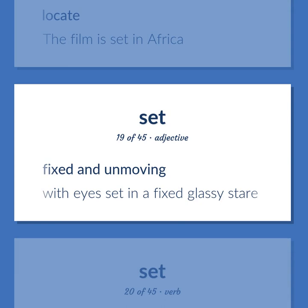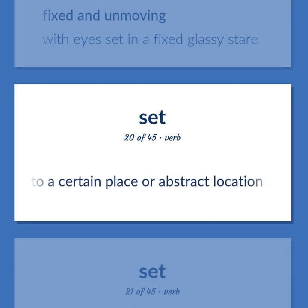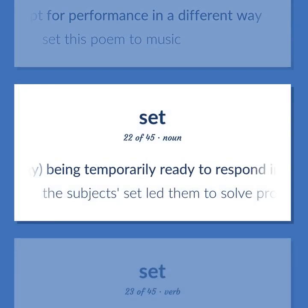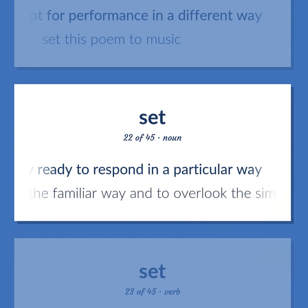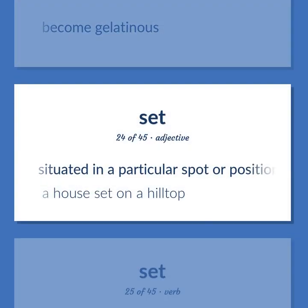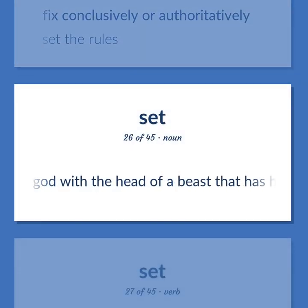Set: Fixed and unmoving. With eyes set in a fixed glassy stare. Put into a certain place or abstract location. Adapt for performance in a different way. Set this poem to music. Psychology: being temporarily ready to respond in a particular way. The subject set led them to solve problems the familiar way and to overlook the simpler solution. Become gelatinous. Situated in a particular spot or position. A house set on a hilltop. Fix conclusively or authoritatively. Set the rules. Evil Egyptian god with the head of a beast that has high square ears and a long snout; brother and murderer of Osiris.